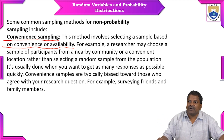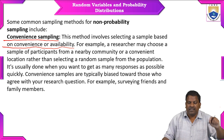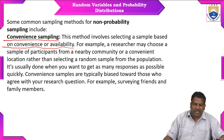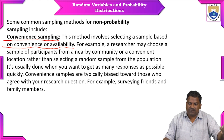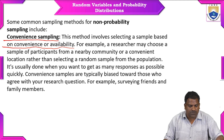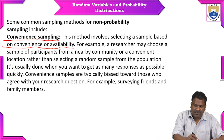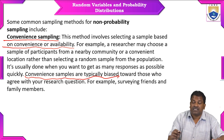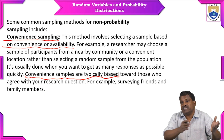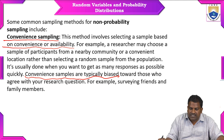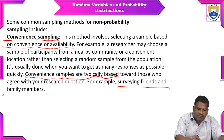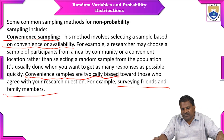For example, a researcher may choose participants from a nearby community or a convenient location rather than selecting a random sample from the population. It is usually done when you want to get as many responses as possible quickly. Convenience samples are typically biased — meaning ambiguity will come. We cannot judge which answer is correct — that is biased. For instance, surveying friends and family members will definitely result in less fairness.